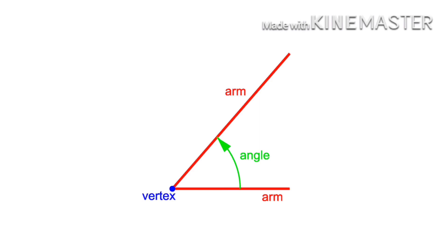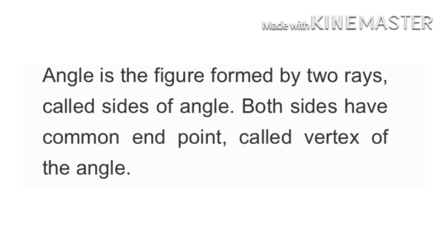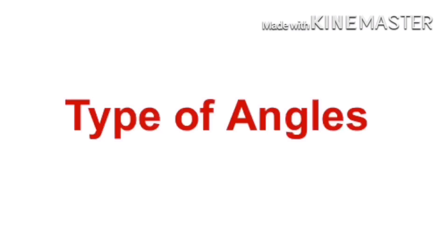So, what is an angle? An angle is a figure formed by two rays called the sides of the angle. Both sides have a common end point called the vertex of the angle. Now let us learn the different types of angles.